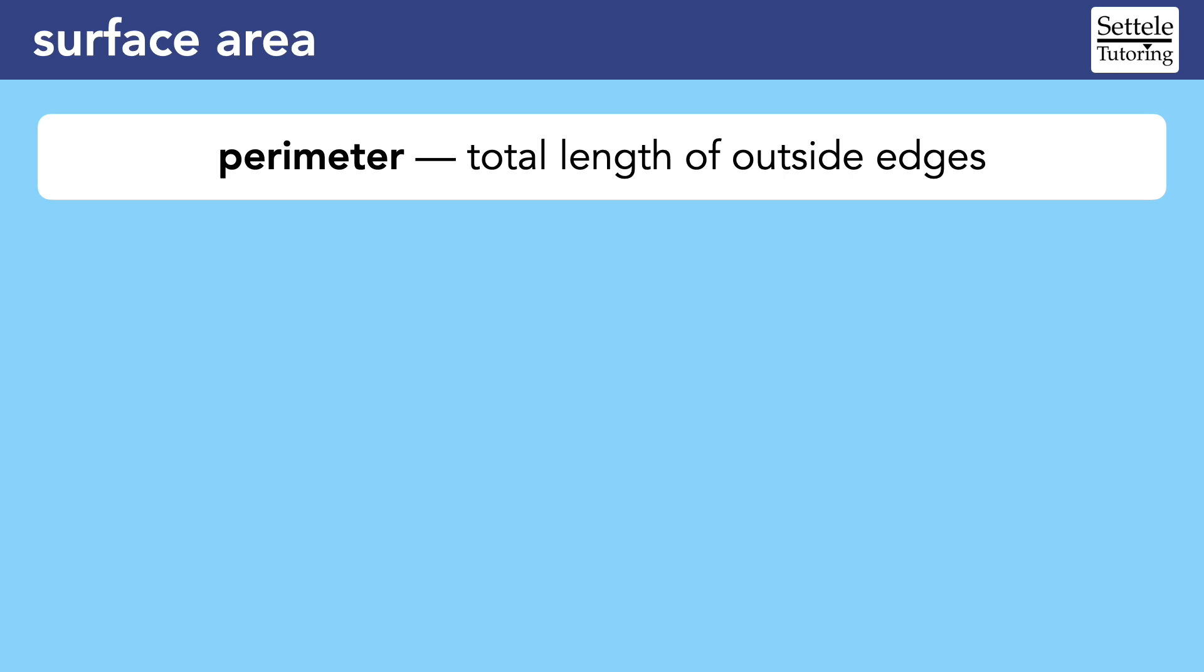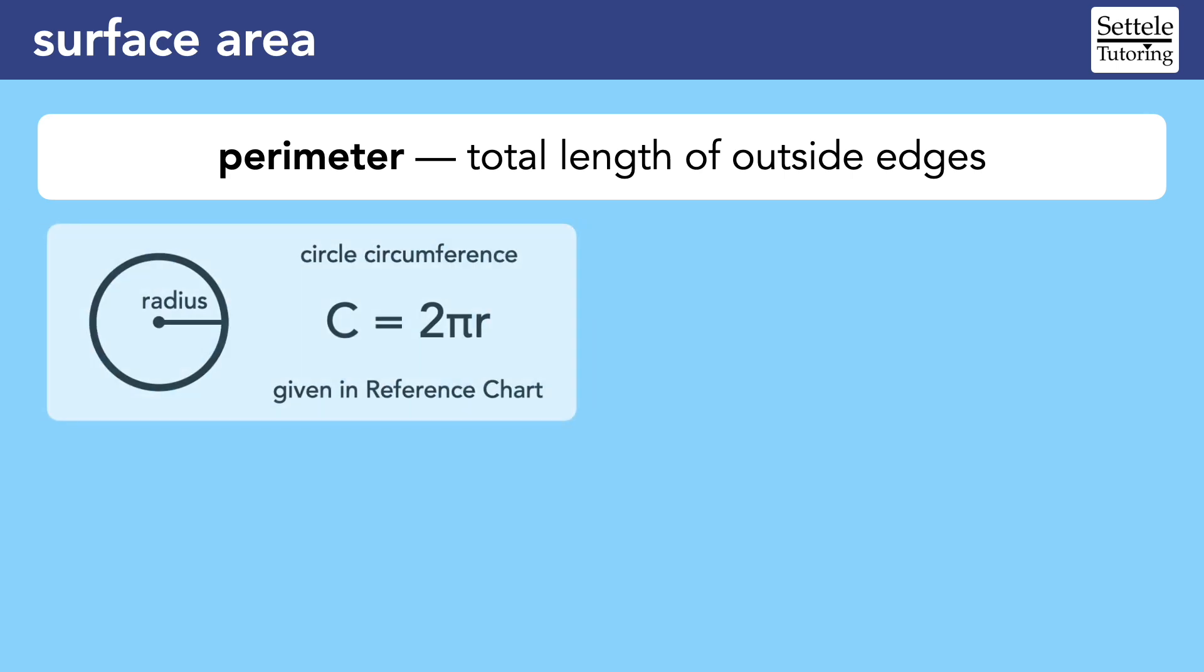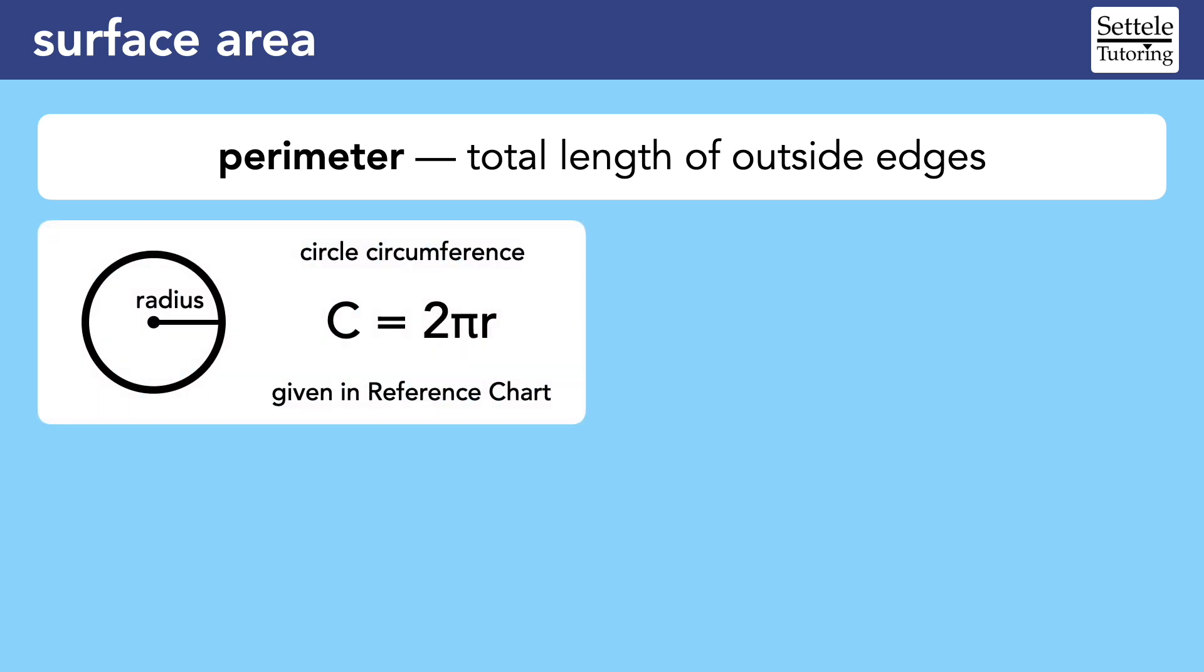For example, there's really only one perimeter formula that we need to memorize, and that's for circles. For some reason, we have a special name for the perimeter of a circle, the circumference, and we know the formula is two times pi times the radius.